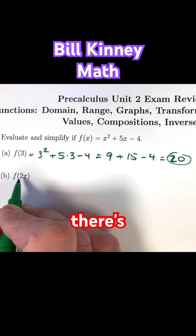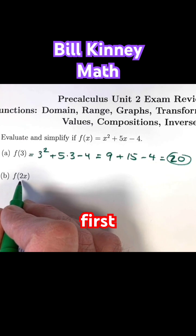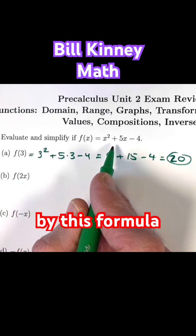It's called a function composition. There's an inner function. We take a number x and multiply it by 2 first, and then an outer function, the function f itself, which is defined by this formula.